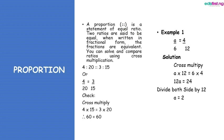Example 1: a over 6 equals 4 over 12. To solve, we cross multiply: a multiplied by 12 equals 6 multiplied by 4, giving 12a equals 24. Dividing both sides by 12, a equals 2. So we have 2 over 6 equals 4 over 12.